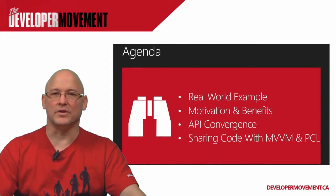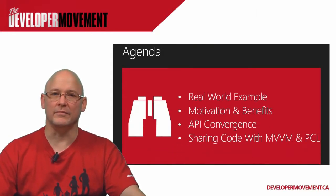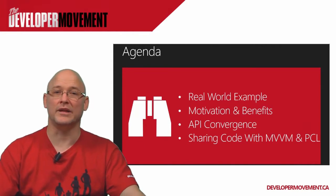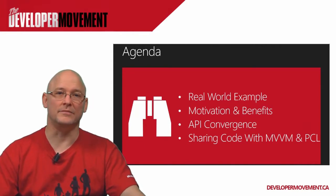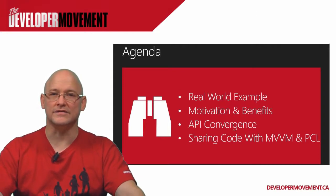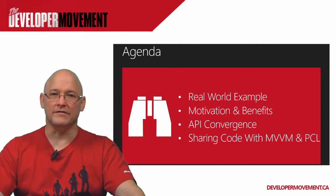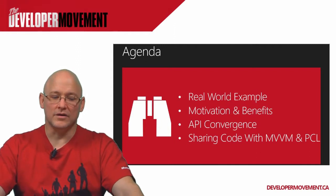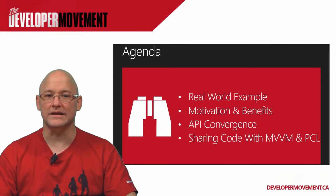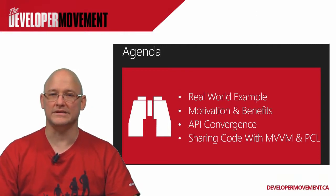What we're going to look at today is a real world example of using MVVM and sharing code across multiple screens and actually across multiple applications, which really helps to improve your ROI and increase the value proposition of using MVVM. We're also going to look at the motivation and benefits, API convergence between Windows Phone and Windows 8, and sharing code with MVVM and PCL.